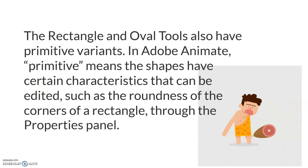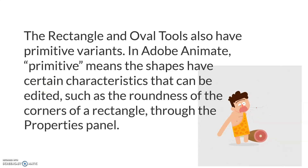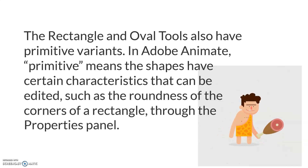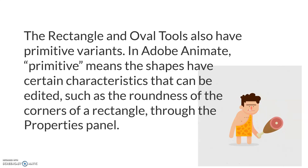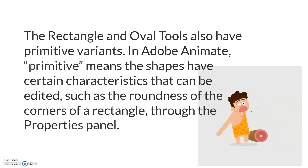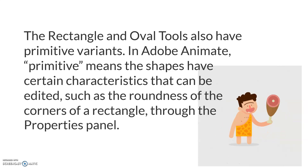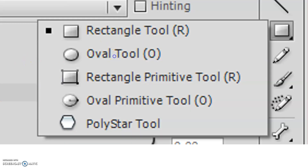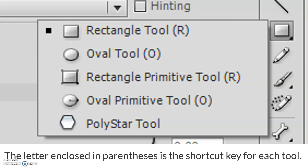The Rectangle and Oval Tool also have primitive variants. In Adobe Animate, primitive means the shape has certain characteristics that can be edited, such as the roundness of the corners of the rectangle, in the Properties panel. The letter in parentheses is the shortcut key for each tool — R for Rectangle Tool, O for Oval Tool.